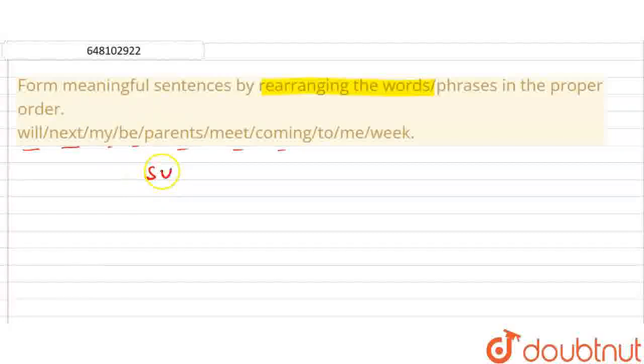So, let's see the basic structure. The basic structure for assertive, affirmative sentences is that we should have a subject, we should have a verb, and in transitive verb accordingly, we should have an object. Okay?